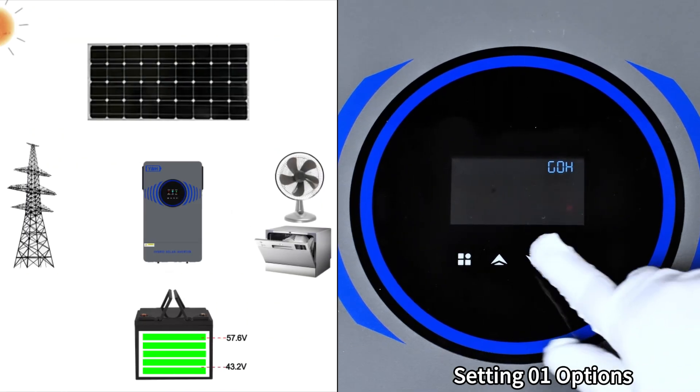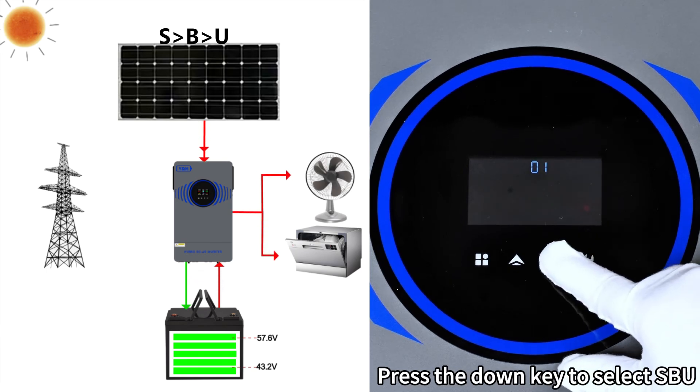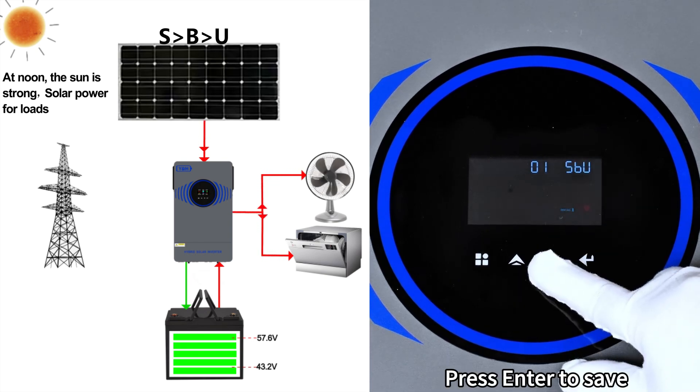Setting 01 options: Press enter to enter setup mode. Press the down key to select SBU. At noon, the side is strong solar power for loads. Press enter to save.